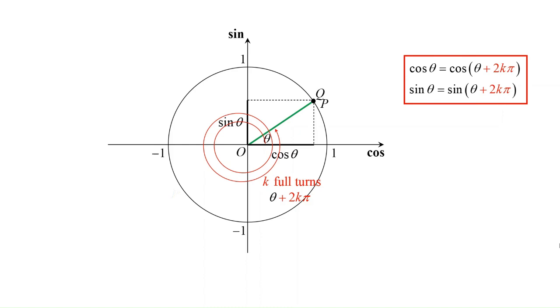Theta and theta plus 2π are not the same angles, but they have the same sine and cosine as they differ by a certain number of full turns. We say that sine and cosine have a period of 2π or 360 degrees.